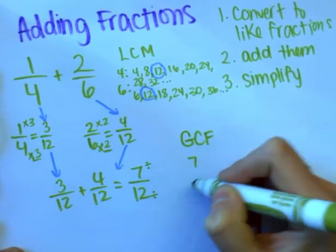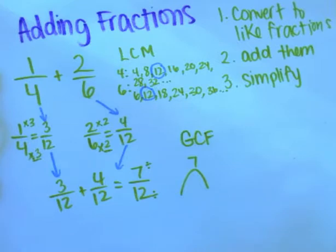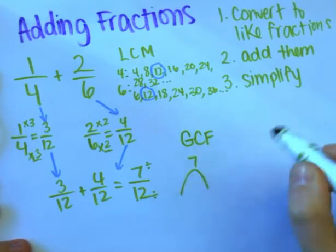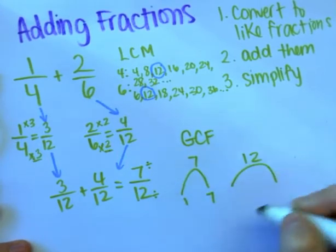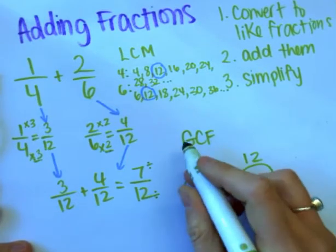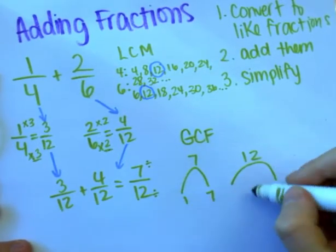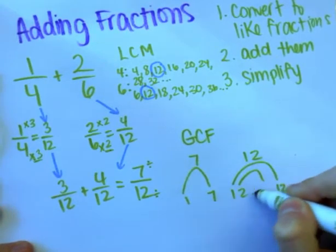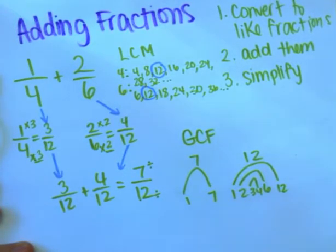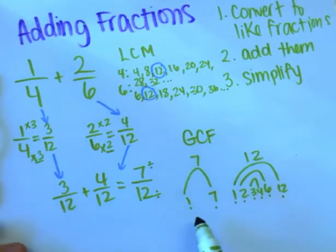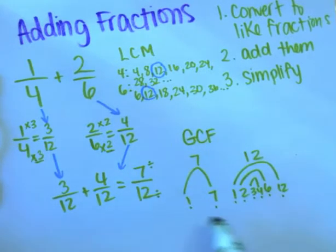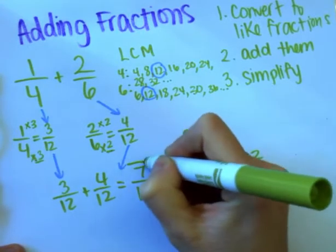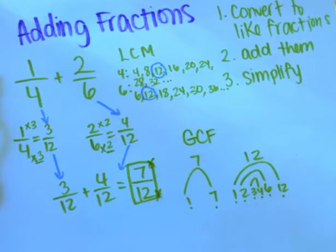To find the greatest common factor, I'm going to make factor rainbows for my numerator and denominator. For seven: one times seven is seven — those are the only two factors. For twelve: one times twelve, two times six, three times four. Looking here, there are no common factors except for one, which means this is already simplified. Seven-twelfths is as simple as it gets.